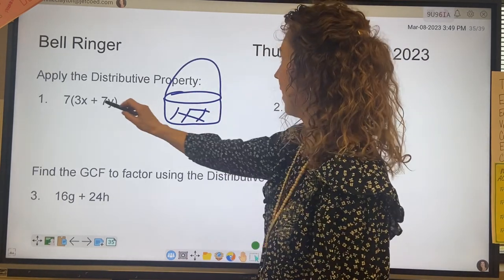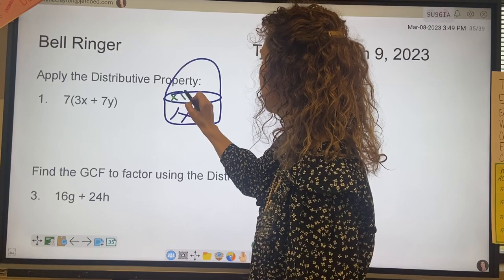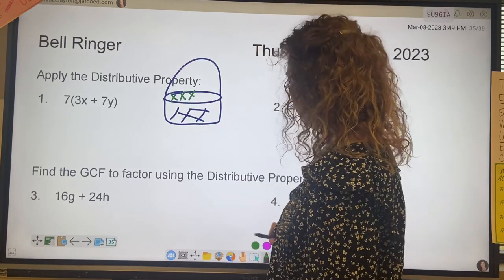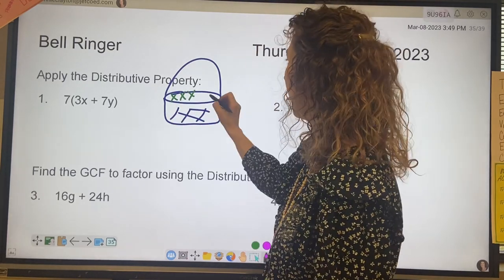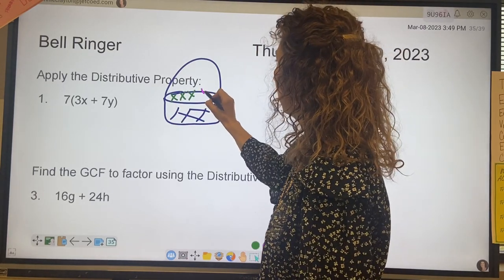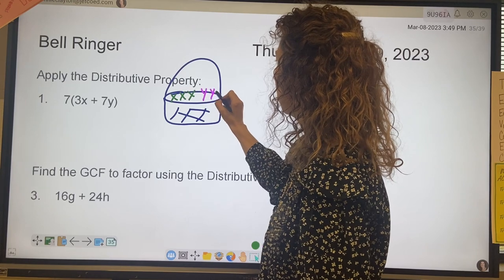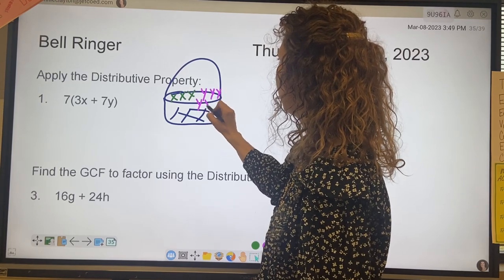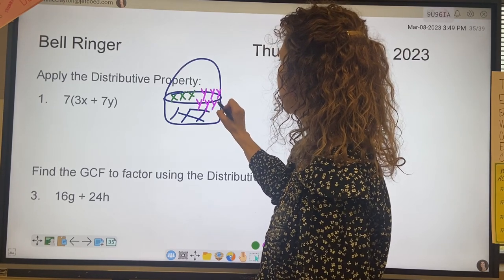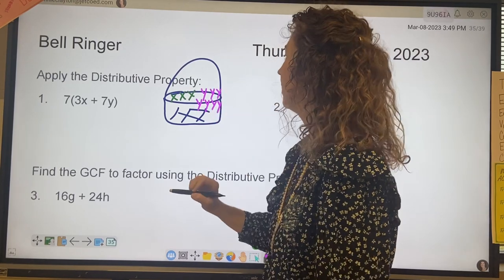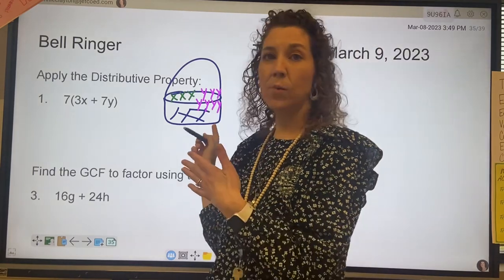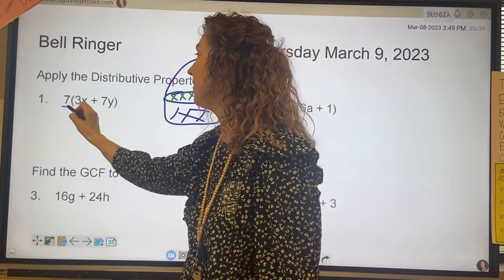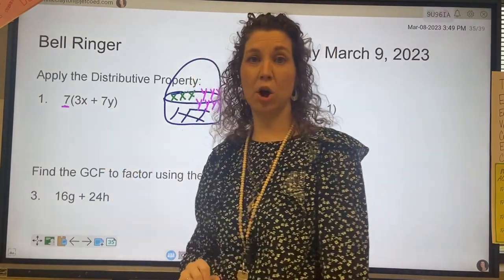In the basket we've got 3x's — 1, 2, 3 — and we've got 7y's — 1 through 7. That's in one basket, but we have 7 baskets total.